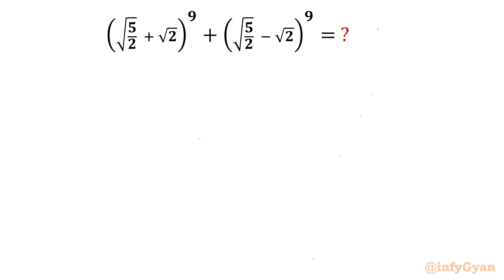Welcome back to InfiGam, my dear friends. In this video we are going to take up one very interesting and challenging question from Olympiads. We have to simplify: square root of (5/2 + √2) whole power 9, plus square root of (5/2 − √2) whole power 9.